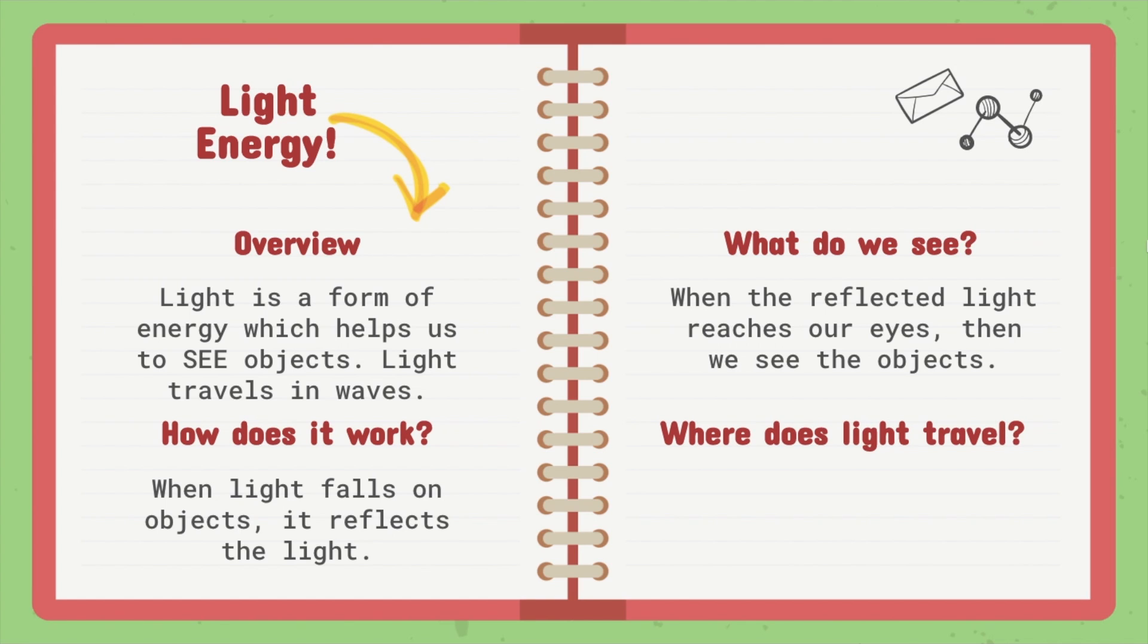Where does light travel? Light travels in a straight line. 186,000 miles per second. Wow that's fast.